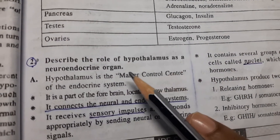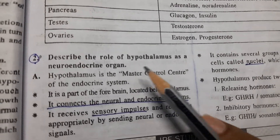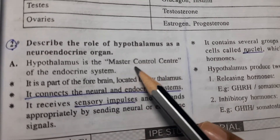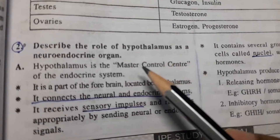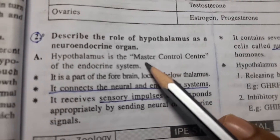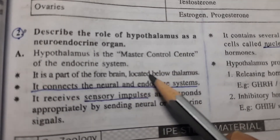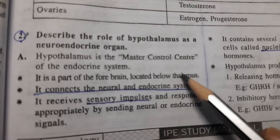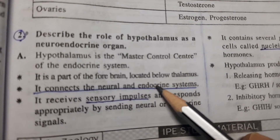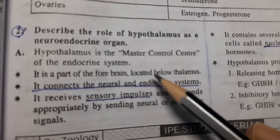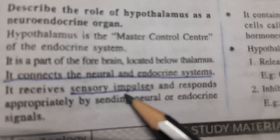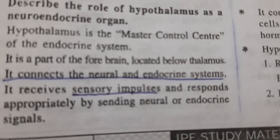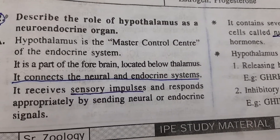The second 4-mark question: describe the role of hypothalamus as a neuroendocrine organ. Hypothalamus is the master control center of the endocrine system. It is a part of the forebrain located below the thalamus. It connects the neural and endocrine systems. It receives sensory impulses and responds appropriately by sending neural and endocrine signals.